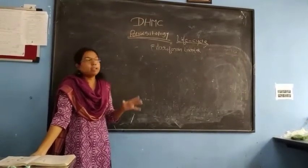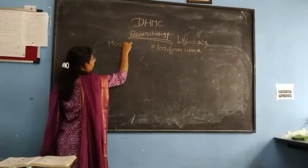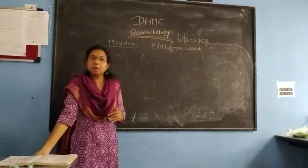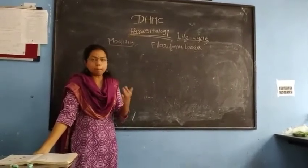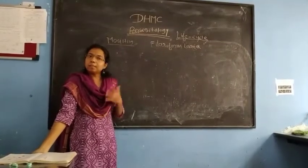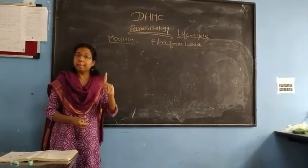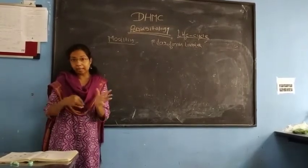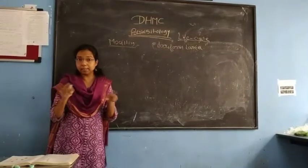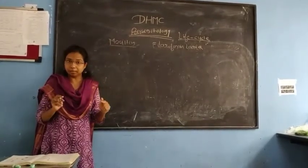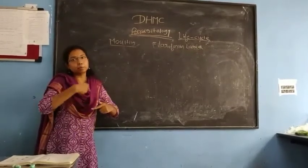Molting means shedding of the cuticle of the larva and formation of a new larval form. We have already discussed two forms: rhabditiform and filariform. When there is breaking of the egg, there is first release of the rhabditiform larva. Then molting takes place — shedding of the old cuticle, the thin shiny layer of skin — and the rhabditiform larva gets converted into the filariform larva.